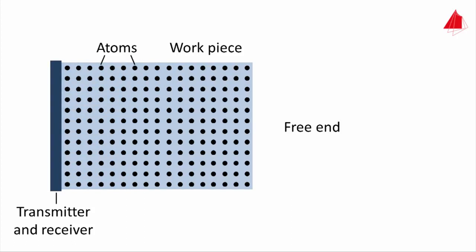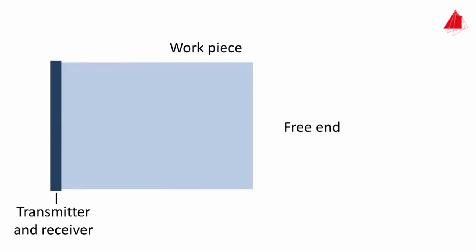So if a sound wave is generated at one end of a workpiece, it will travel through the material with its speed of sound. At the free end of the workpiece, the sound wave is reflected and it returns to the transmitter, which then acts as a receiver.